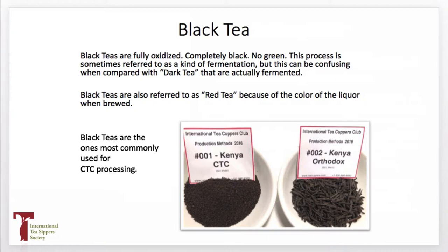Black teas are fully oxidized — completely black, no green. The process is sometimes referred to as fermentation, but this can be a little confusing because of the dark teas, which are actually fermented like we think of the chemical fermentation process. So I prefer to talk about black teas as fully oxidized. You'll also hear black teas referred to as red teas — very confusing because we sometimes refer to rooibos, which is not a Camellia sinensis but an herbal tea, as a red tea. People who call a black tea a red tea do so because that is the color of the liquor. Black teas are also more commonly used for CTC processing.